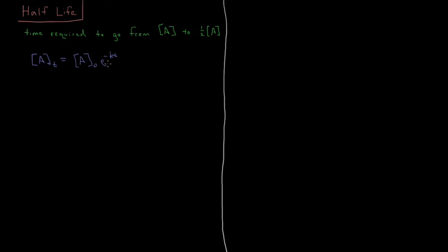To calculate half-life, we want to find what is the time required, or T-half, in order for A to go to half of its initial value. So its initial value is A₀, so we're going to set this equal to one-half of A₀.